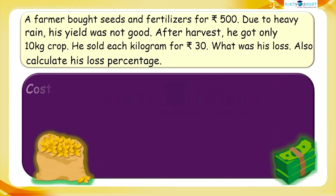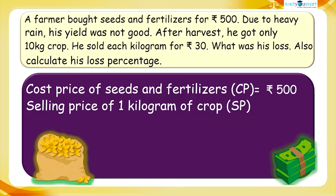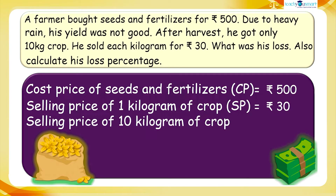We have the cost price of seeds and fertilizers: CP = rupees 500. The selling price of one kilogram of the crop: SP = rupees 30. So the selling price of 10 kilograms equals rupees 30 multiplied by 10 kilograms, which equals rupees 300.